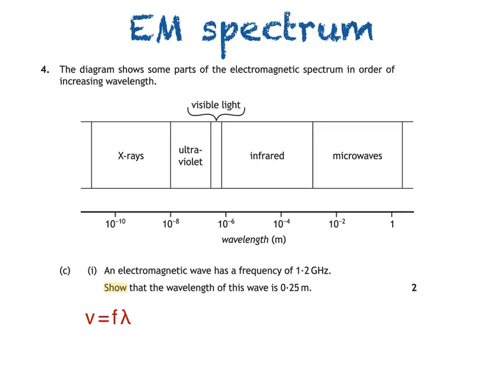We're trying to find wavelength lambda, so we can rearrange the equation: lambda is equal to V divided by F. The speed of all electromagnetic waves in a vacuum and in air is 3 times 10 to the power of 8 meters per second. If you forget this number, you'll find it in the data sheet at the front of the exam, written as the speed of light in air. The frequency is given as 1.2 GHz — that's 1.2 times 10 to the power of 9 hertz. When we substitute these values into the equation, we get the expected wavelength of 0.25 meters.